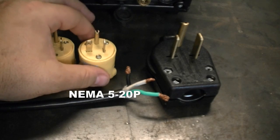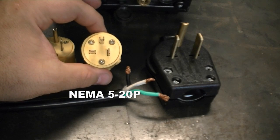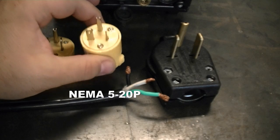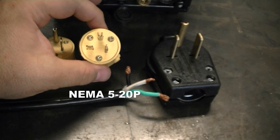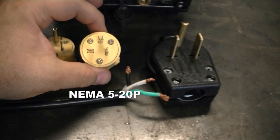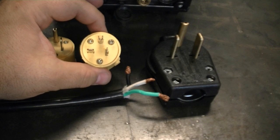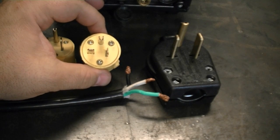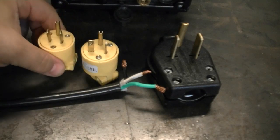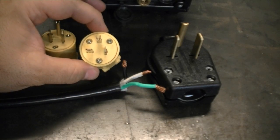Now this is a 20 amp plug here. This has got a standard configuration for a 20 amp receptacle. Now your 20 amp receptacles typically will have two flat blades just like this unit, with the center of one of the flat blades turned sideways.